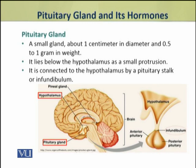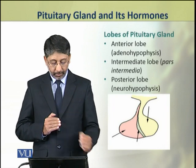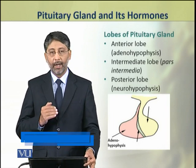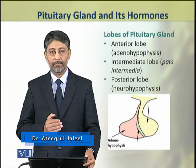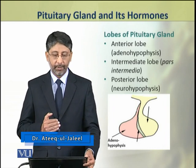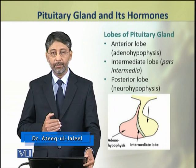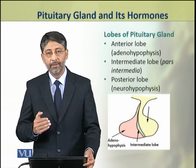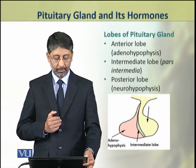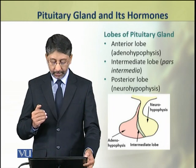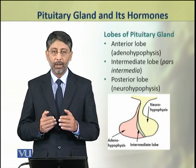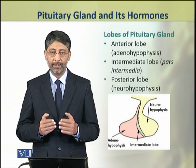The pituitary gland has three lobes: the anterior lobe, which is called adenohypophysis; the second lobe is the intermediate lobe or pars intermedia; and the third lobe is the posterior lobe, also called neurohypophysis.